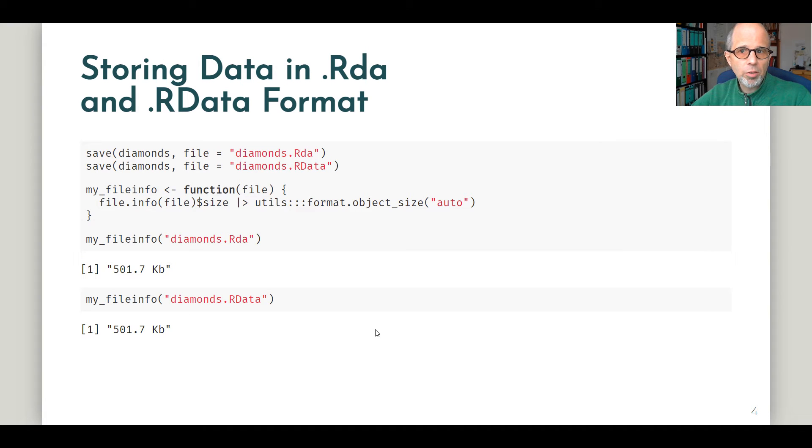We start out with the .rda and .rdata formats. And you see the commands are essentially the same. We save the data, specify the object name and the file name. And then I wrote a little custom function to display the file size. I'm using the file.info function. It's got a slot for size. And I'm using the utils package to format the result a little bit more nicely. And we see the file sizes are exactly the same. .rda is basically just a shortcut for .rdata. Apart from that, the files are the same.